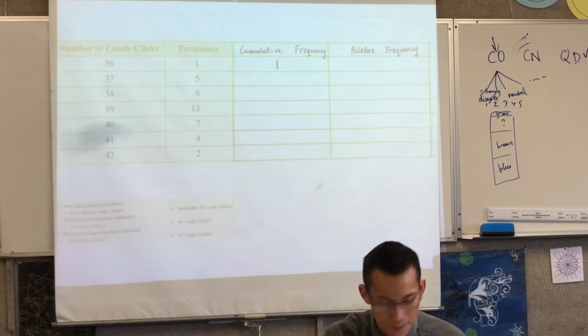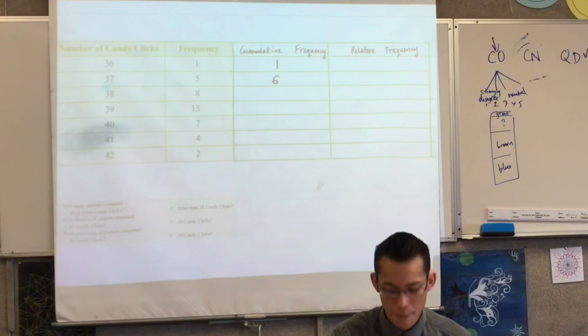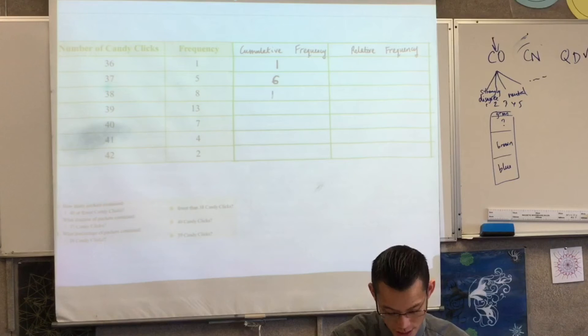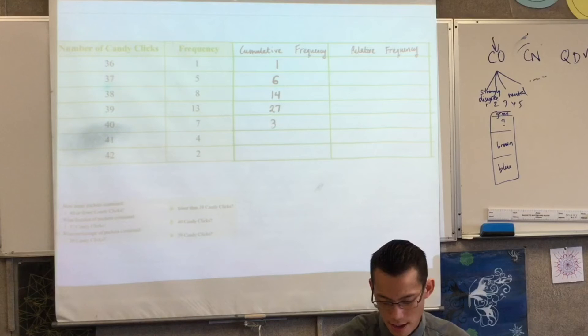So the first one will be 1, the second one is going to be 1 plus 5 which is 6, the next one's going to be 6 plus 8 which is 14, plus 13 which is 27, 34, 38 and okay good.